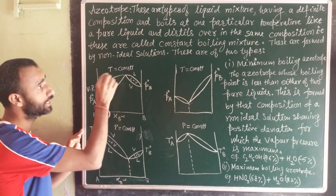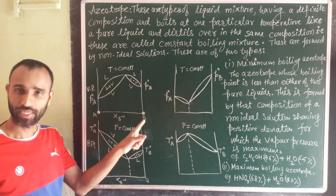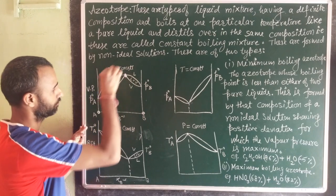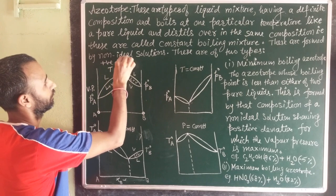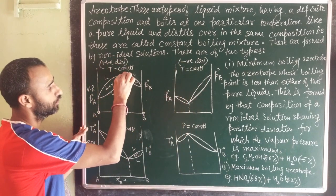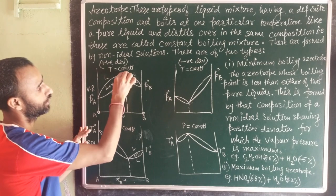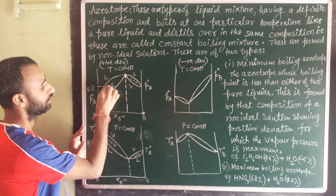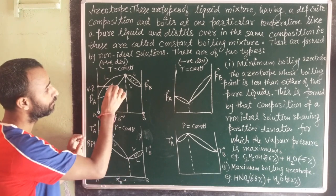Azeotropes are types of liquid mixtures. This is pure liquid A, this is pure liquid B, and in between is the mixture. For positive deviation, there is one particular composition at which liquid and vapor phases have the same composition. If we draw a horizontal line at any vapor pressure, liquid composition is different from vapor composition, but they merge together at this specific point.